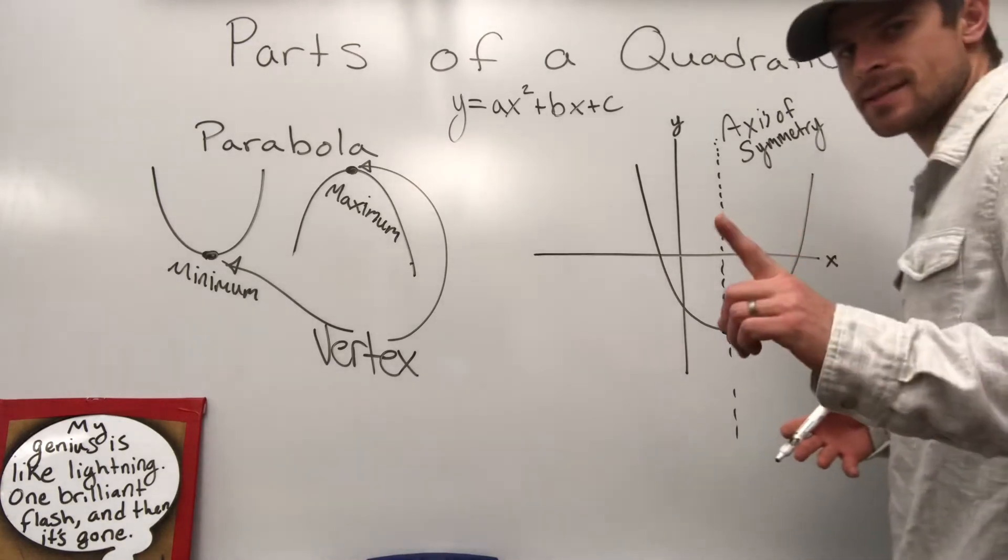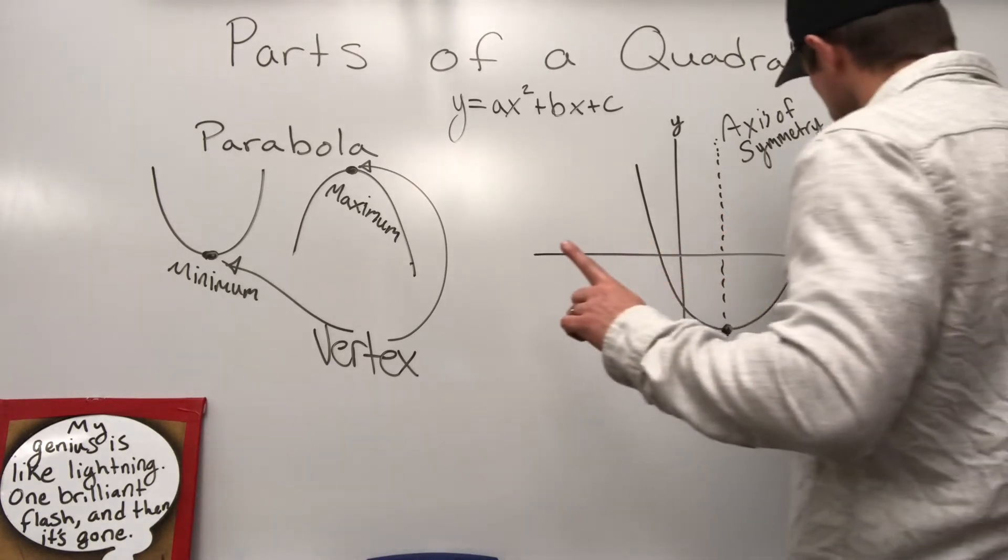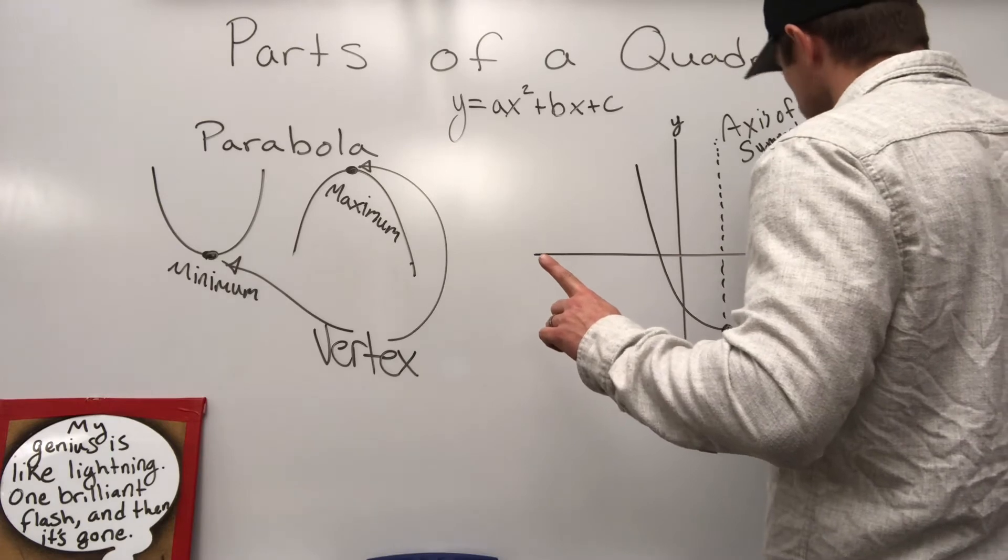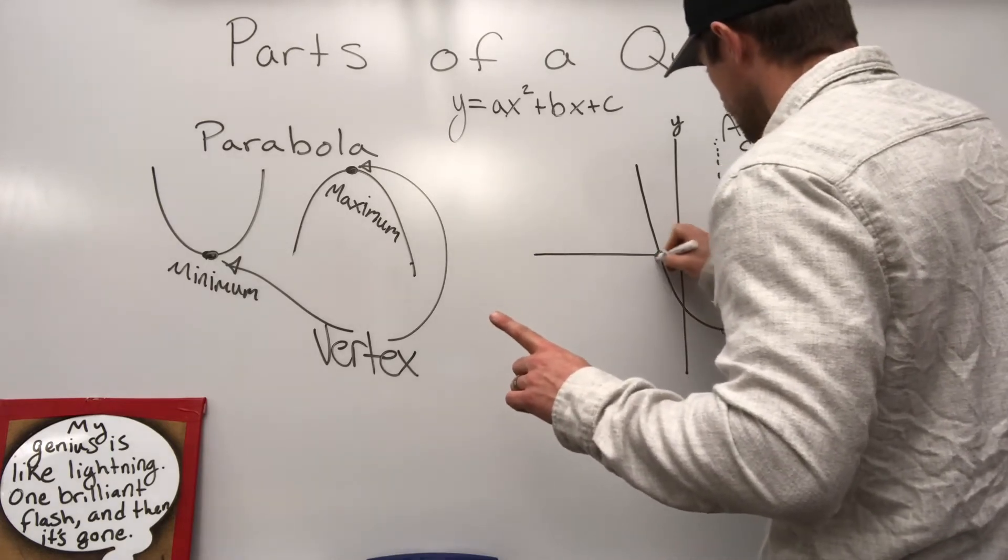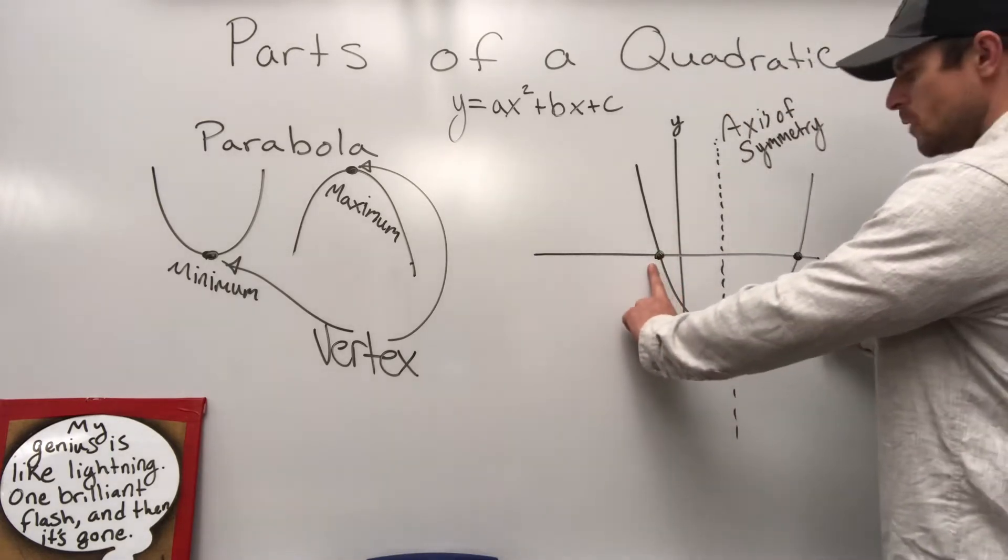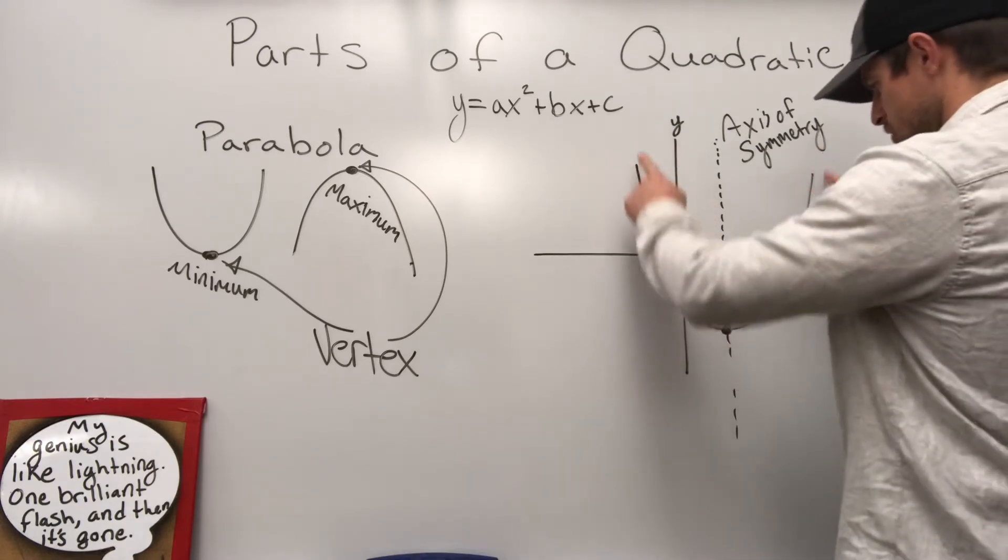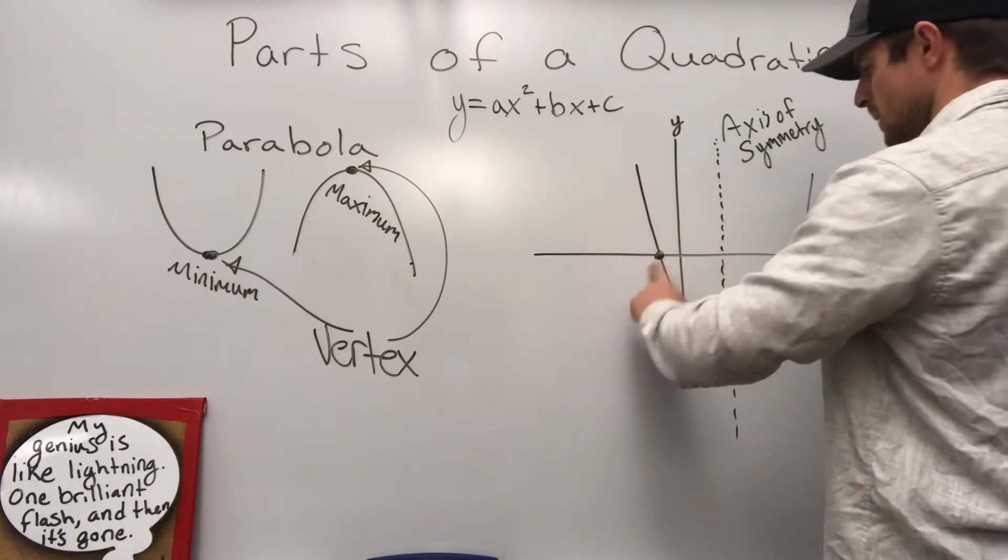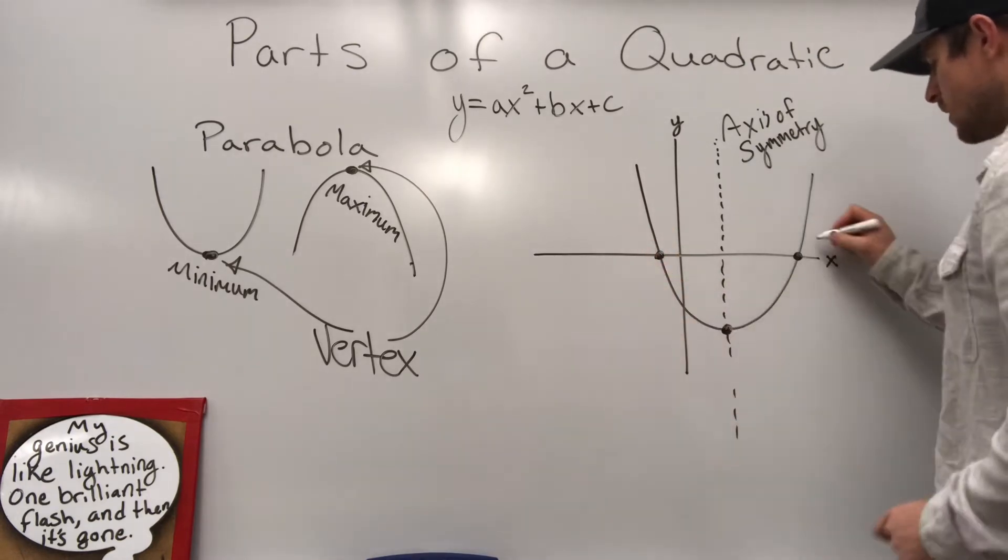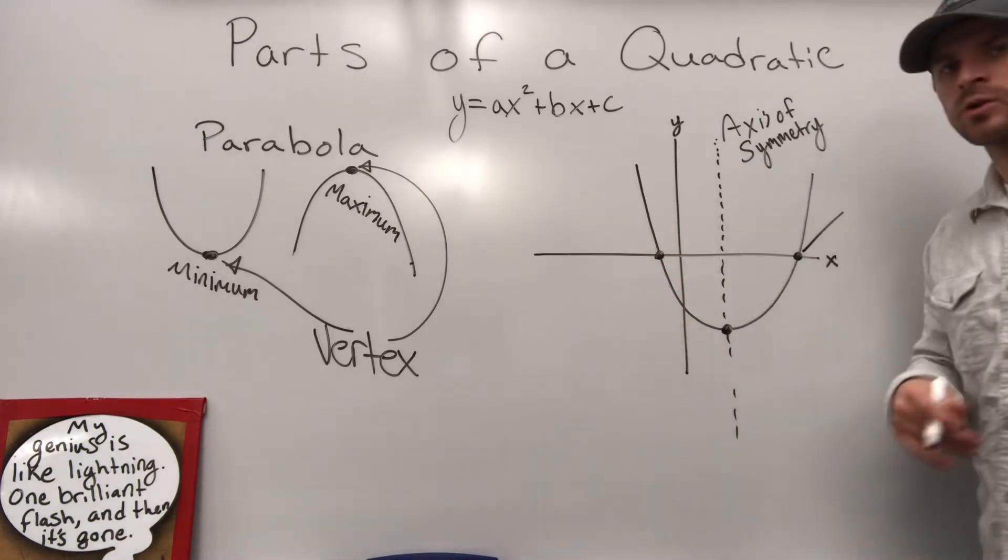One last and final part is right there and right there. The two x-intercepts, the two parts where we hit on this shape, the U shape goes boom, boom, it hits right there and right there. These are roots or solutions.